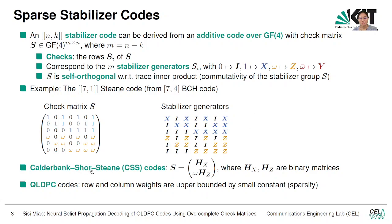More specifically, we call a stabilizer code which has check matrix in this form, where H_X and H_Z are both binary matrices, as CSS codes, named after the inventors of this code. The quantum LDPC codes we are looking at are CSS codes, and they have a sparse check matrix, which means that the row and column weights are upper bounded by a small constant which is irrelevant to the block length.